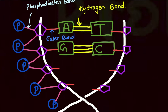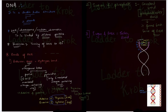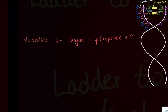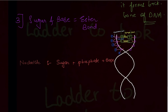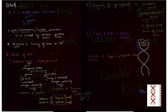DNA is formed of nucleotides. A nucleotide is sugar plus phosphate group plus base. All three — the sugar, the phosphate, and the base — together form a nucleotide. Remember the meaning of nucleotide and the bonds present in DNA. That's it — thank you.